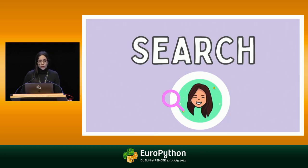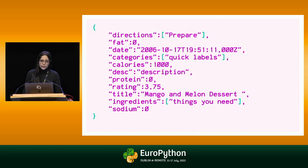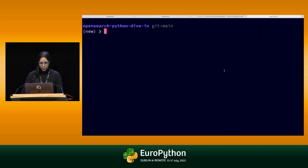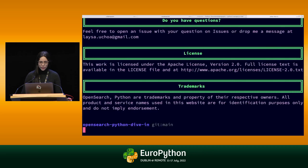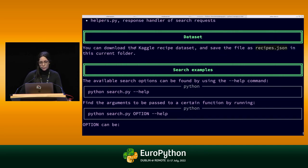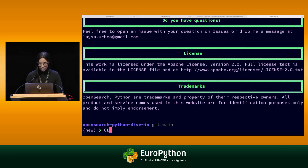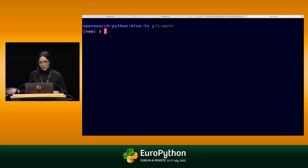Now I'm going to go over some search queries. I'll be using the Python OpenSearch client with some recipe data — since we're almost at lunchtime, I picked some lunch recipes for us to work with. You can find everything in this repository; scan the QR code or find it on GitHub. The data includes fields like recipe directions, title, categories, and so on. I already have an OpenSearch cluster running with the data loaded. You can find in the repository how I set that up. Now I'll focus on the queries.